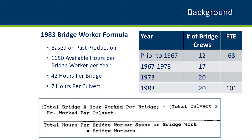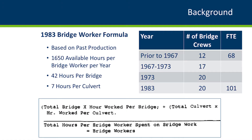A little bit of background to the formula. In 1983, we started with a formula that was solely based on past production. It looked at the total number of bridges multiplied by the hours worked per bridge, and the total number of culverts multiplied by the average hours worked per culvert, divided by the total available hours per bridge worker per year. Those hours worked per bridge and per culvert were based on past historical data.